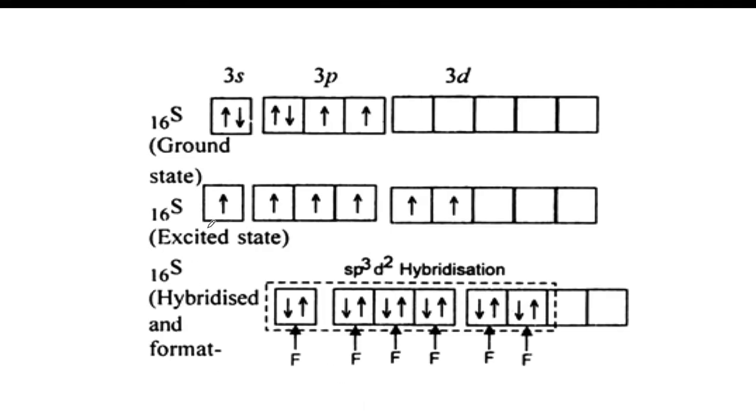Now if you take the example SF₆, SF₆ is the example for the sp³d². So SF₆, in this S if we take the electronic configuration of S in its ground state is 1s², 2s², 2p⁶ after that the valence shell is 3s² and 3p⁴. So the electron from 3s gets promoted to 3d.